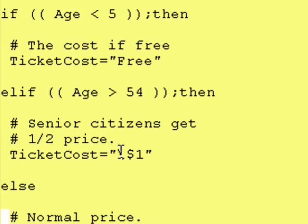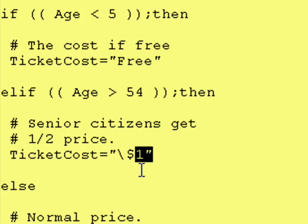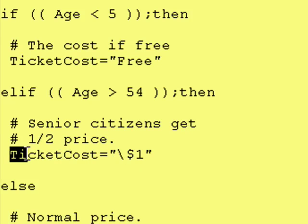If you notice, there is a backslash in front of the dollar sign. Because the dollar sign normally means do variable substitution, if we want to print a literal dollar sign instead of triggering variable substitution, we have to put a backslash in front. Otherwise, Corn Shell will try to find a variable named 1 and try to get the value from it, and plop it in right where it sees $1. By putting the backslash in front, it takes the special meaning away from the dollar sign. So if you printed out ticket cost, it would show $1.